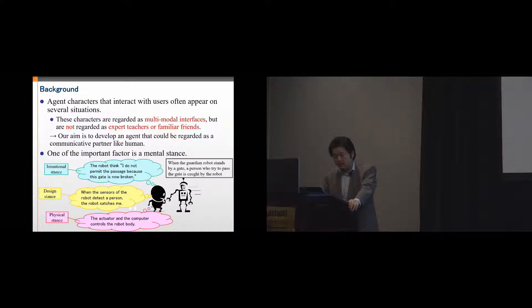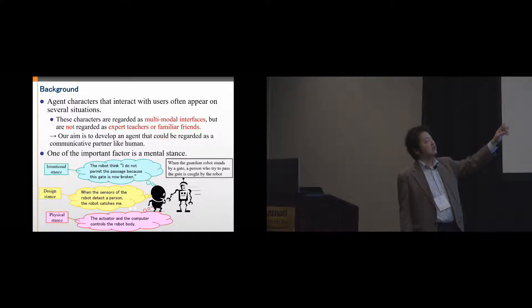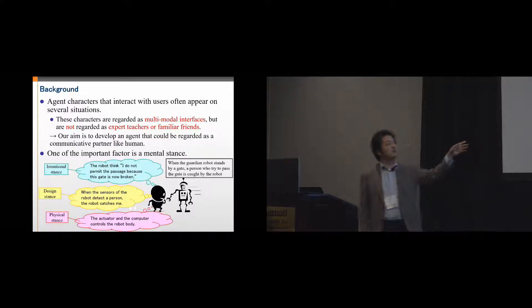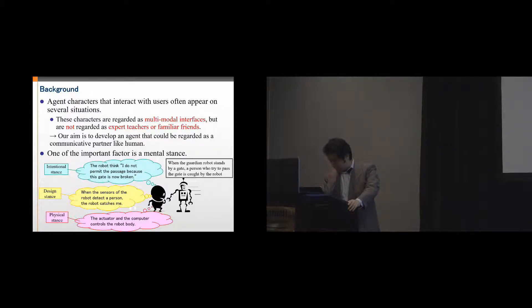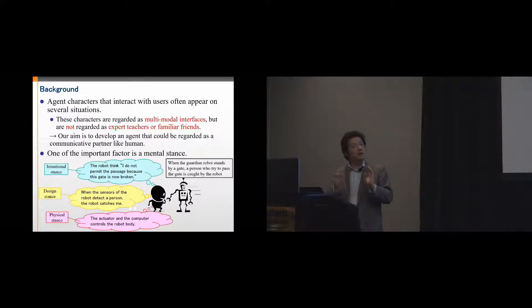When a human interacts with another human, they usually take an intentional stance. When we take the intentional stance, we consider that an interaction partner has subjective thoughts and intentions. In this case, the person thinks the robot thinks: I do not permit the passage because this gate is now broken. They and their communication partner respect each other. This mutual respect factor is important in collaborative support or discussion support systems.